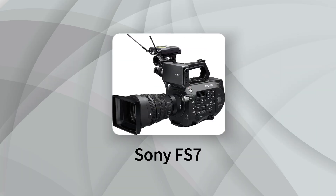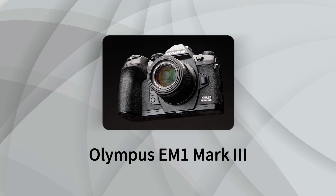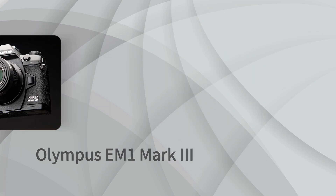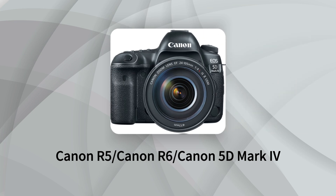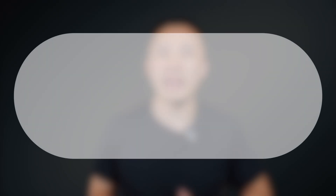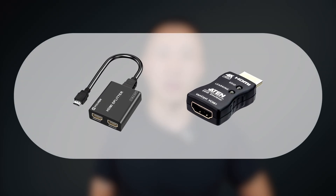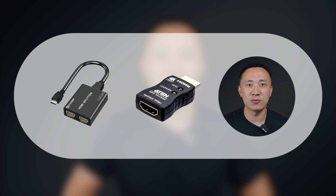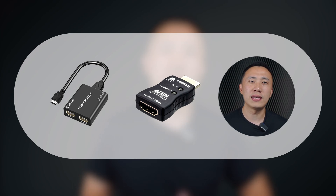YoloBox can be used in conjunction with most video cameras on the market. However, there are a few exceptions that can't be directly recognized by YoloBox or can only provide a lower resolution. Known incompatible cameras include the Sony FS7, Nikon P1000, Olympus EM1 Mark III, and Canon's R5, R6, and 5D Mark IV. If your camera is not compatible with YoloBox, you could consider adding an HDMI splitter or an EDID emulator. Both can effectively resolve the incompatibility issues between the YoloBox and the camera.